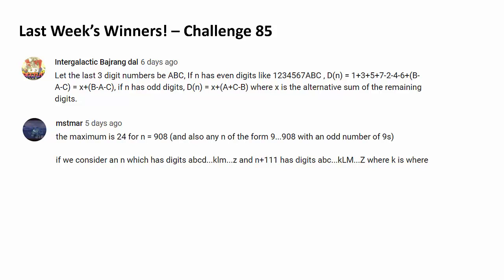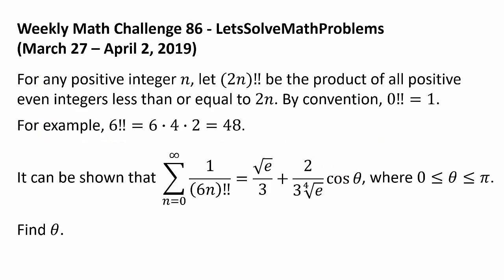Now let's get to this week's challenge. For any positive integer n, let (2n)!! be the product of all positive even integers less than or equal to 2n. By convention, 0!! = 1. For example, 6!! would be 6 × 4 × 2, or 48.